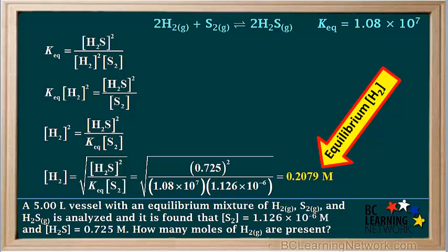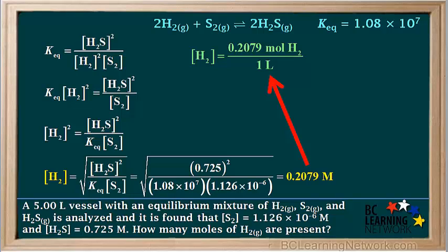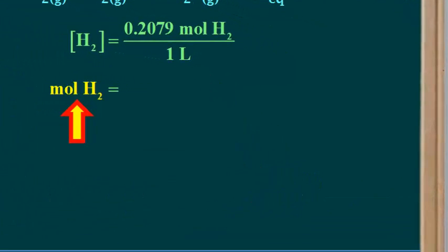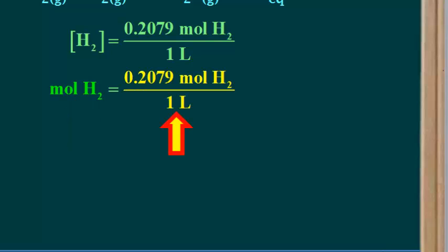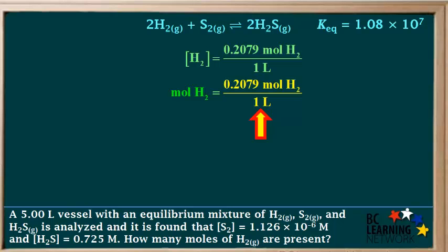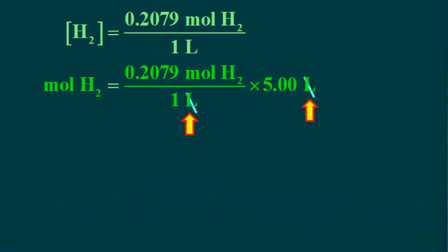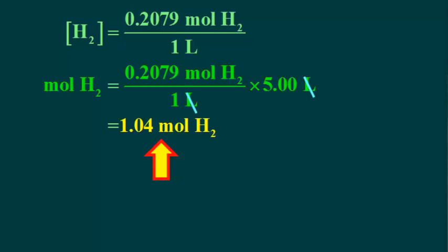We won't round to the correct number of significant figures until the last step in the problem. Now we have the equilibrium concentration of H₂, but the question asks for the moles of H₂ present. We can express the concentration of H₂ as 0.2079 moles of H₂ per liter. Remember, moles equals molarity times liters. So moles of H₂ equals 0.2079 moles per liter times 5 liters. We cancel out the liters and multiply to give us 1.04 moles of H₂. This is the last calculation, so we round the answer to three significant figures — the same as the lowest number given in the original data.